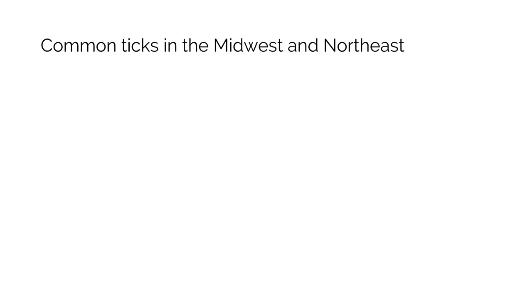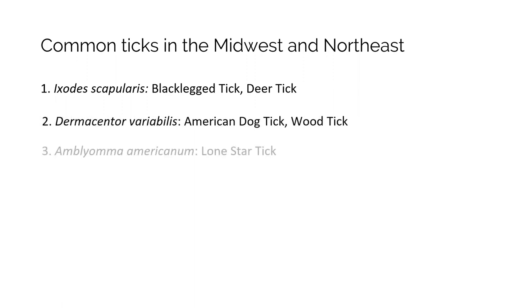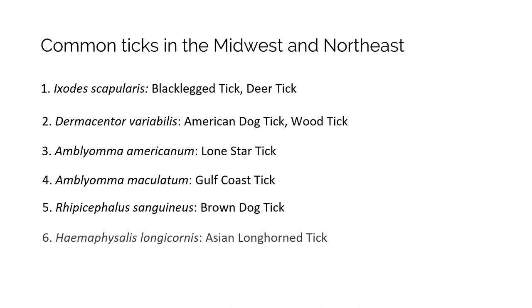The ticks we'll be covering today include the more common ticks in the Midwest and the Northeast, including Ixodes scapularis, otherwise known as the black-legged tick or the deer tick; Dermacentor variabilis, the American dog tick, also called the wood tick; Amblyomma americanum, the lone star tick; Amblyomma maculatum, otherwise known as the Gulf Coast tick; Rhipicephalus sanguineus, the brown dog tick; and finally the recently introduced Haemaphysalis longicornis, otherwise known as the Asian longhorn tick. We will now go through the species in more detail. Please note that we're referring to unfed ticks in this module, and that changes in appearance due to feeding will be covered in module 3.